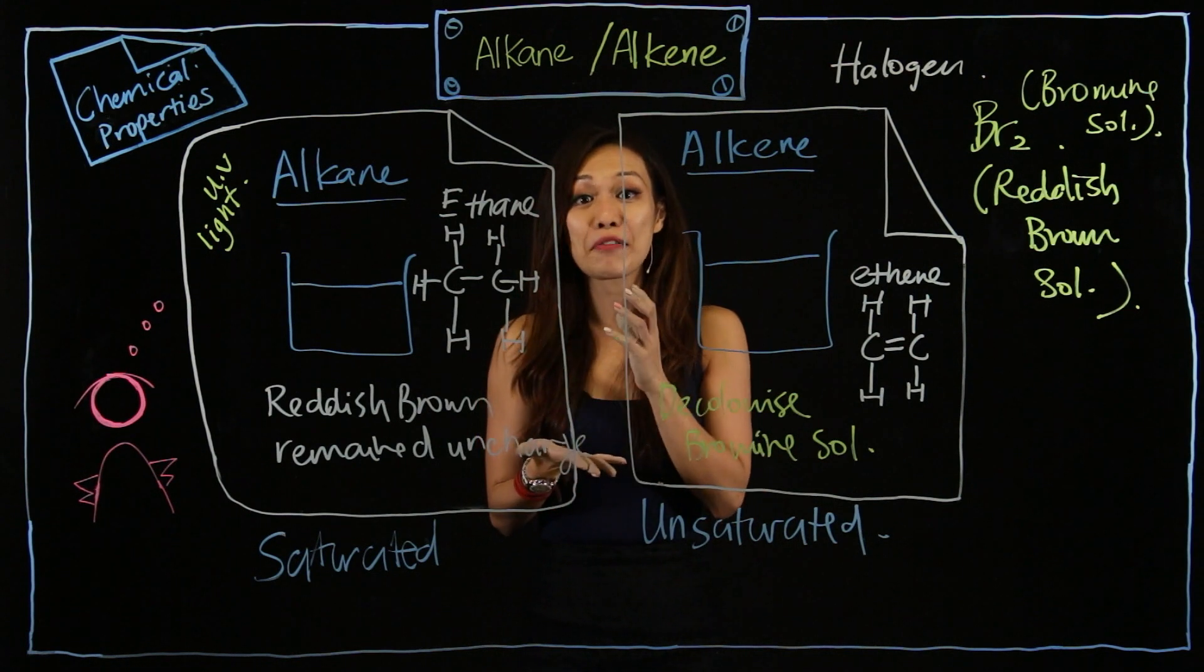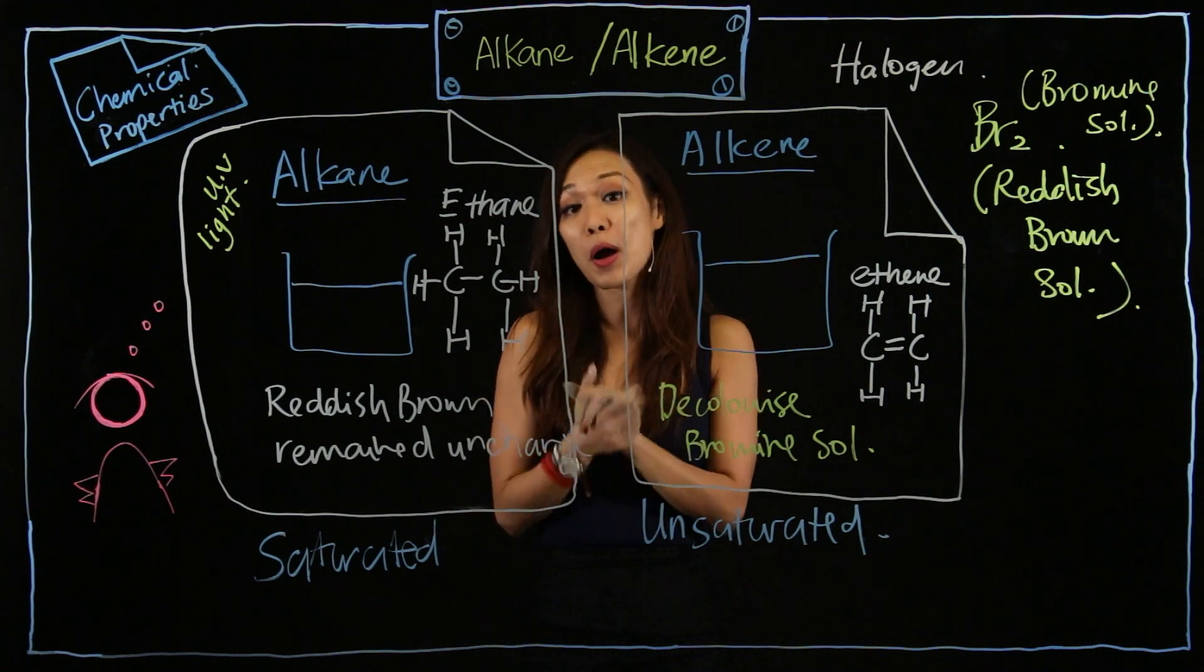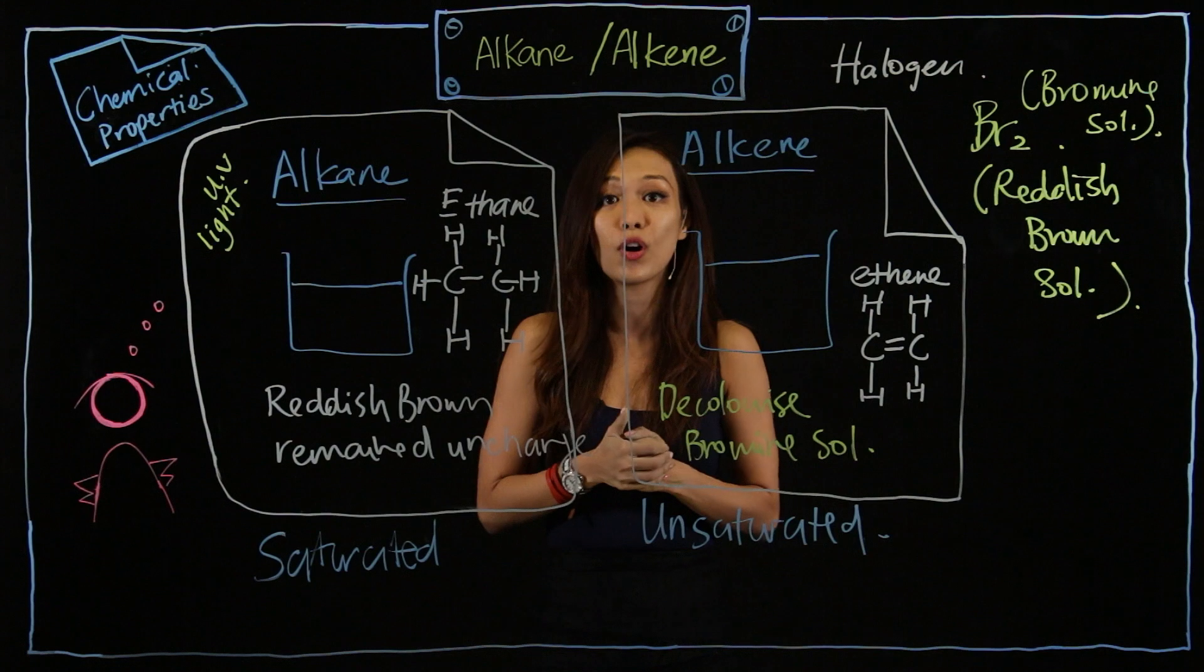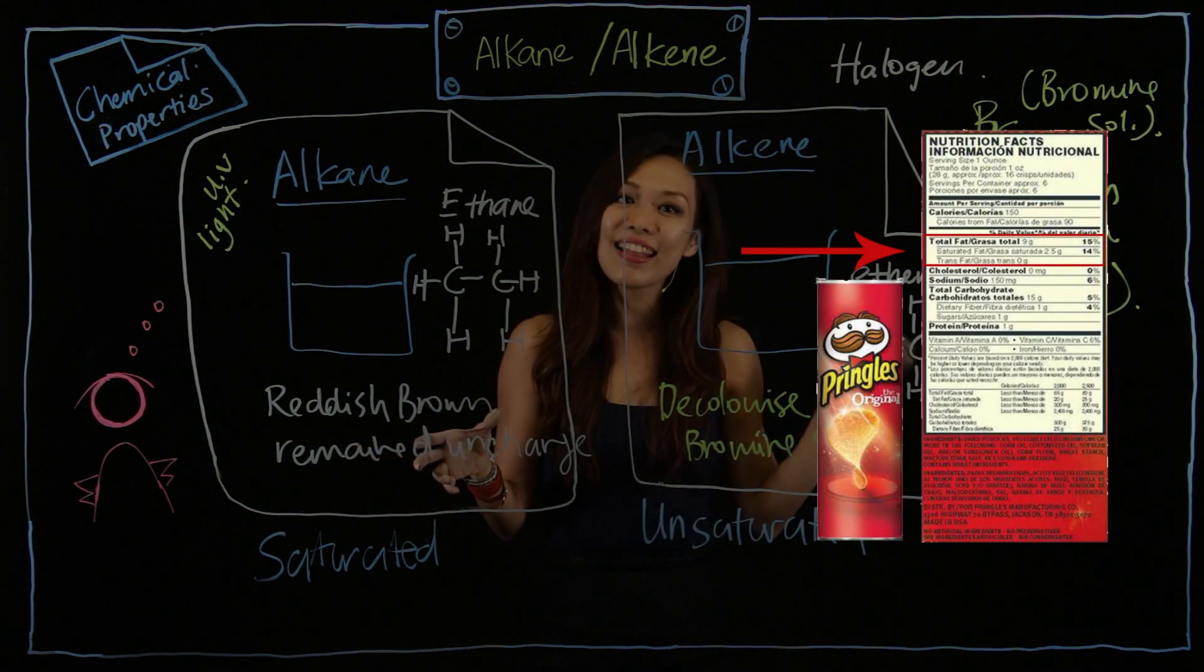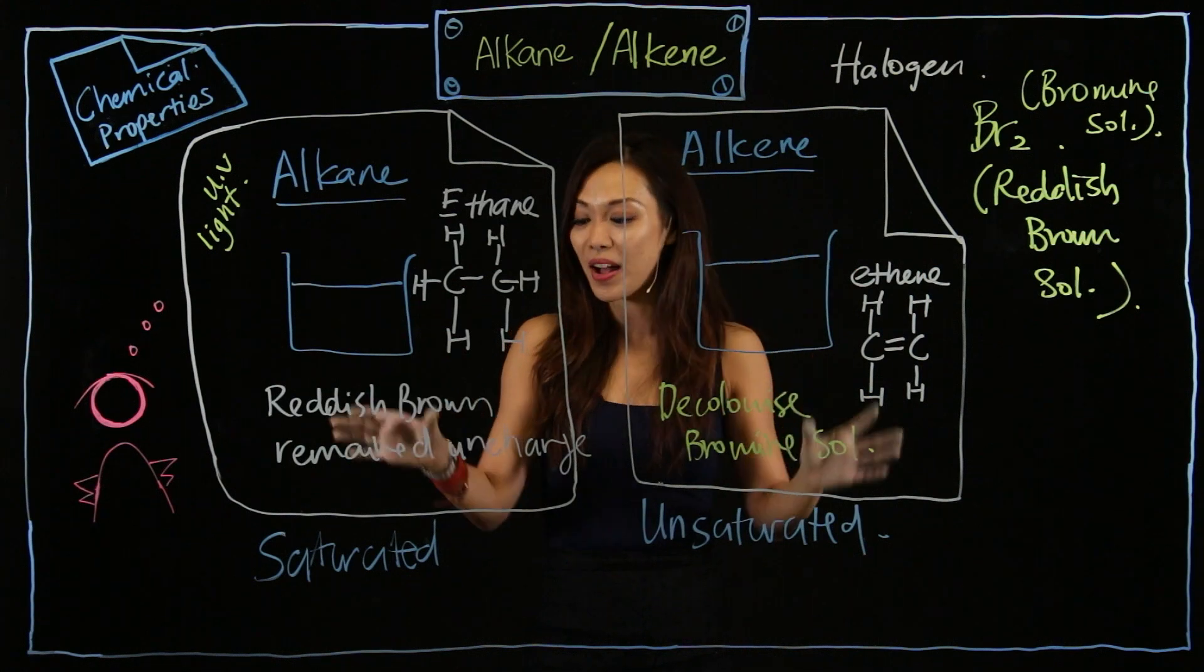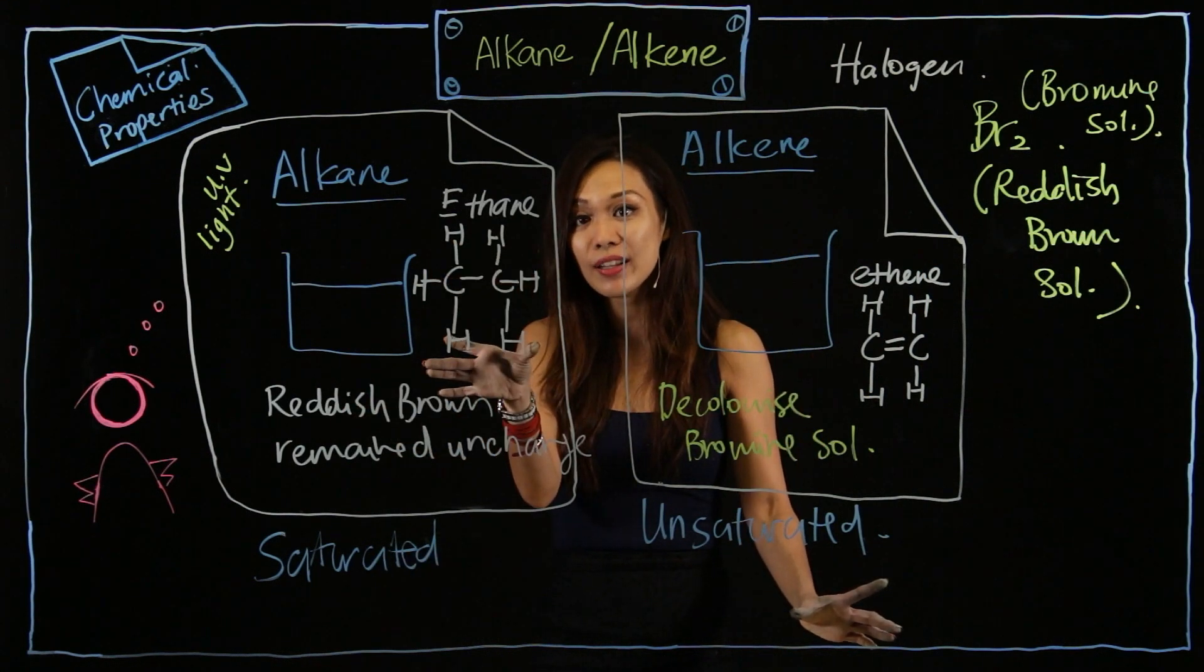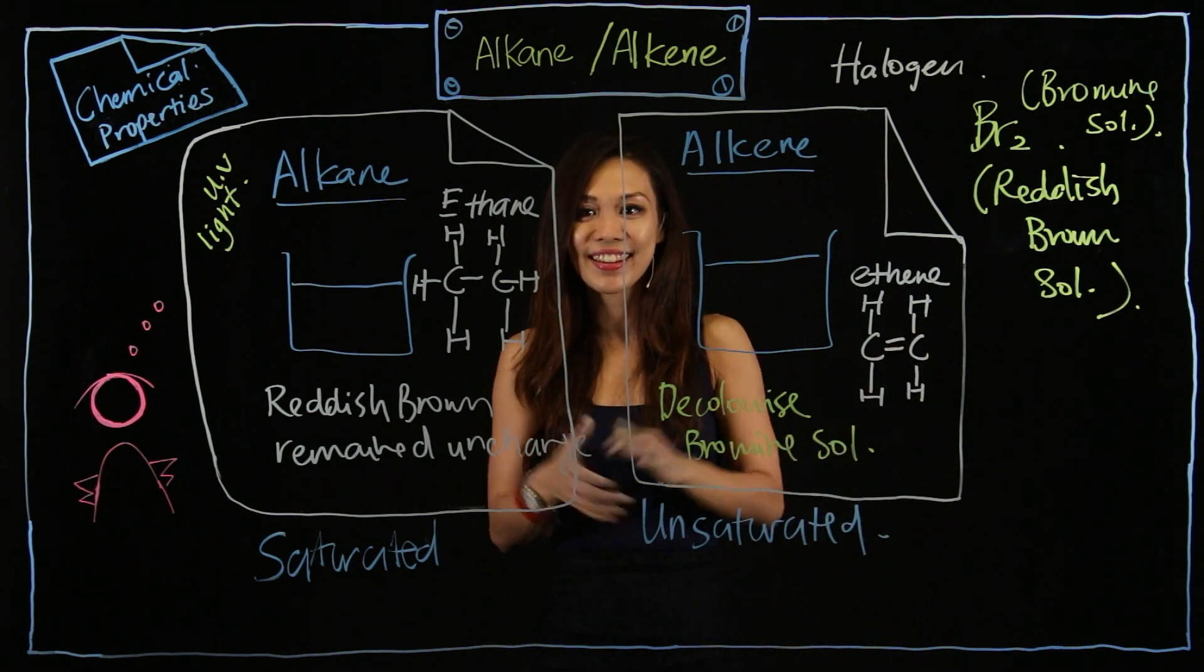So one is saturated and one is unsaturated. You will also see this commonly used in some of your food that you have eaten. One of the most common things is if you have tried to eat Pringles potato chips before, you look behind there's this thing called saturated fats and unsaturated fats. And they all boil down to whether they contain saturated hydrocarbon or unsaturated hydrocarbon. Did you get that?